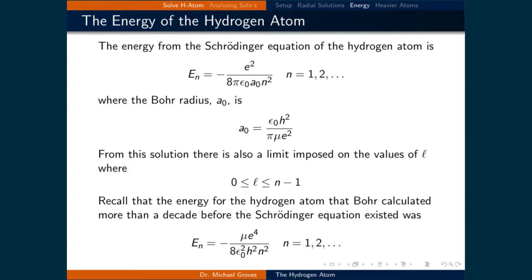The Bohr radius, which is denoted as a naught, is epsilon naught h squared over π mu e squared.